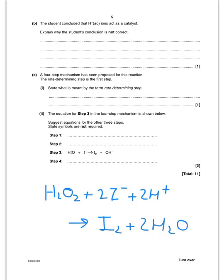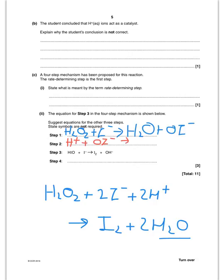For the mechanism, step one uses the two reactants in the rate determining step: H2O2 plus I minus. This gives H2O plus OI minus. In step two, H+ reacts with OI minus to give HIO. For step three, we need to get rid of OH minus, which doesn't appear in the overall equation, and use up another H+ — combining those gives the other water molecule.